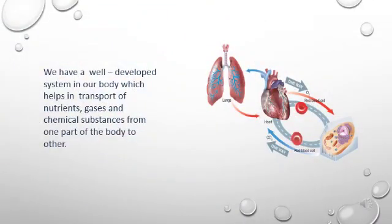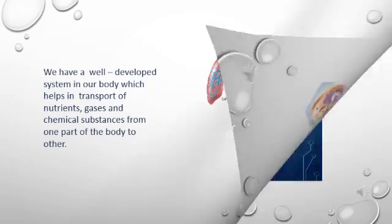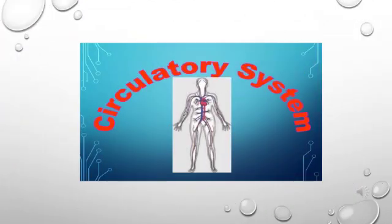You know children, we have a well-developed system in our body which helps in transport of nutrients, gases and chemical substances from one part of the body to the other. After looking at this picture, you must have guessed that I am talking about the circulatory system. So today we are going to start with our next chapter: the circulatory system.